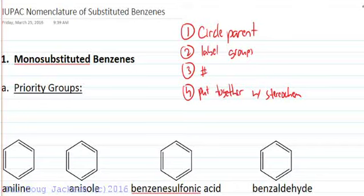Let's talk about IUPAC nomenclature of substituted benzenes. We're going to follow the same roadmap for nomenclature that we always have, but there will be a few differences. We'll first circle the parent chain, label the groups, number that parent chain, and then put the name together and remember stereochemistry at the end.